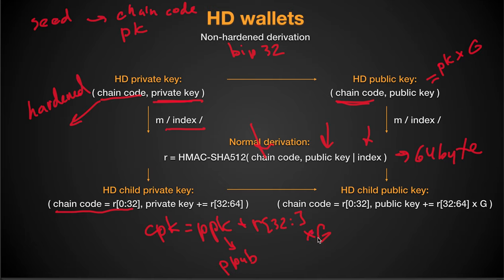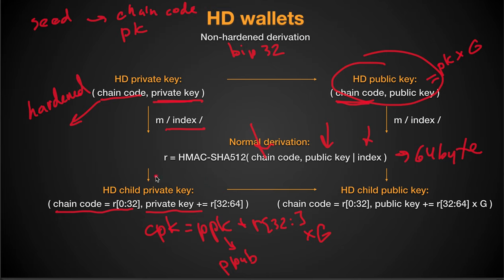This is very useful for watch-only software wallets. If we give out the master public key, the software wallet has all the information it needs to derive child public keys — it just takes the chain code, the public key, and the index, hashes them together, and adds the result to the parent public key. This way they can monitor the blockchain for received funds without having the private keys to sign or steal our funds.